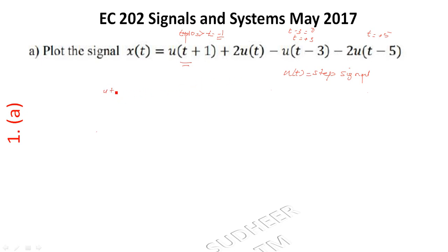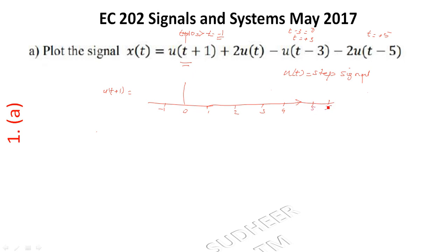Draw the x-axis and y-axis. On the x-axis, mark t values: -1, 0, 1, 2, 3, 4, 5, 6, 7. u(t+1) starts at t = -1 and continues to infinity with magnitude 1.